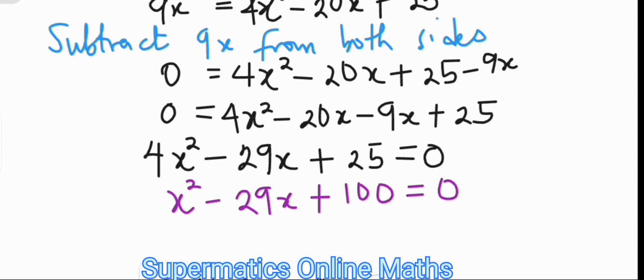Now, what we consider is the factors of 100, whose sum gives negative 29. And this should be negative 4 and negative 25. Hence, x squared minus 29x plus 100 is going to factor as x minus 4, x minus 25 equals 0.